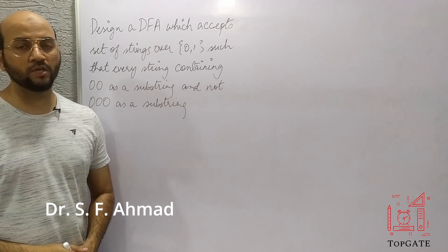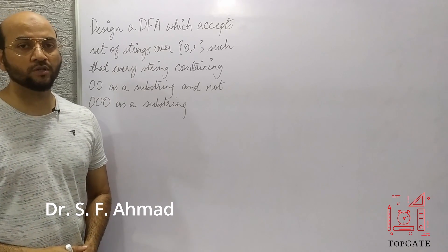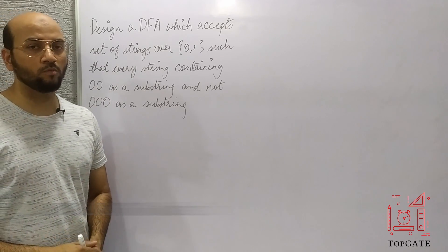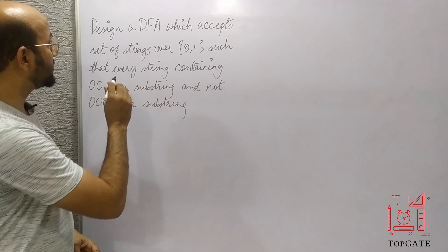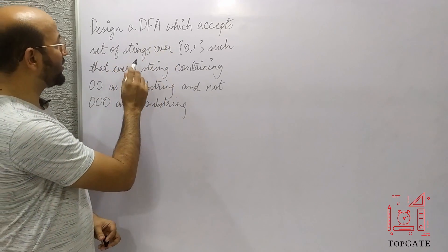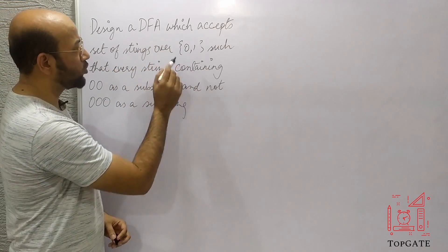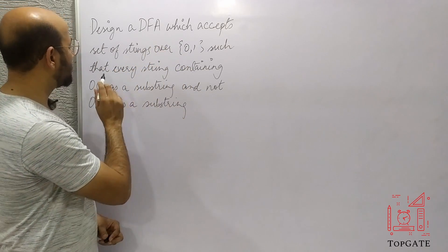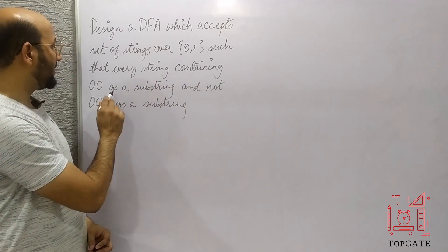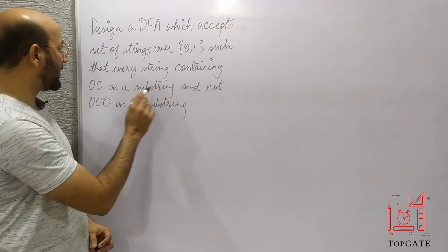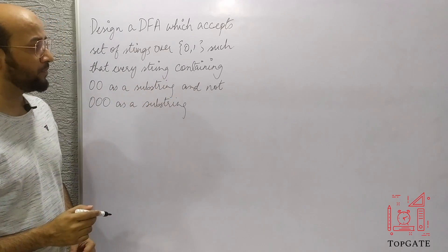Hello students, welcome to the channel TopGate. In this video, I will discuss one more problem of DFA — that is, to design a DFA which accepts the set of strings over the alphabet {0,1} such that every string contains '00' as a substring and does not contain '000' as a substring.